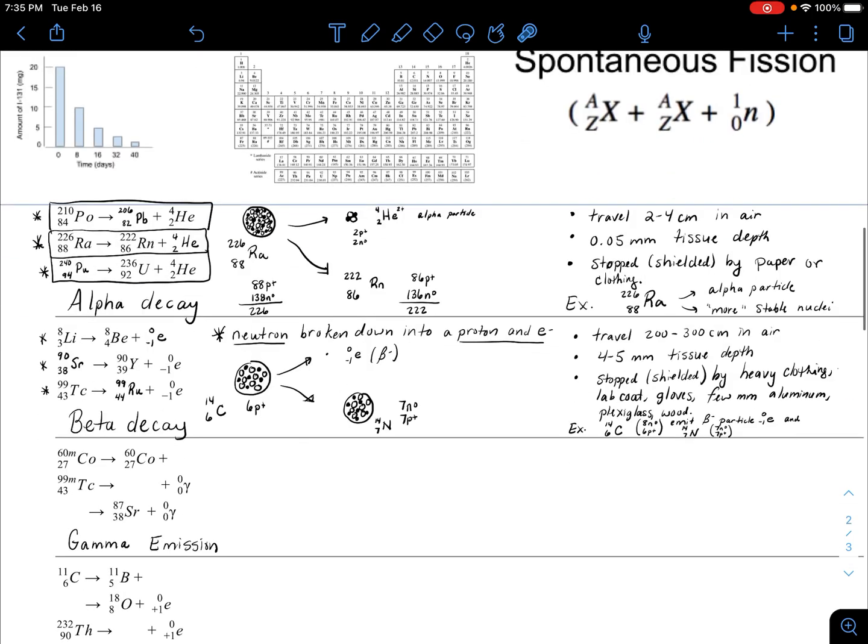But again, in this video I want to focus on gamma emission. Now gamma emission typically accompanies an alpha or beta decay, but what I'm going to do is just assume it's just a unique gamma emission reaction or nuclear reaction. They're not very common but they are possible.